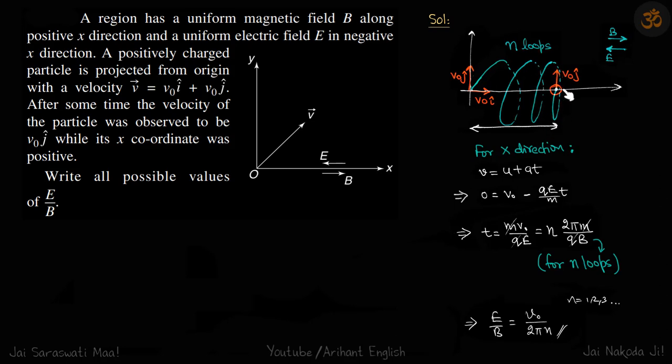Every time it crosses the axis, this particle's velocity in the y-direction becomes v0 j-cap.